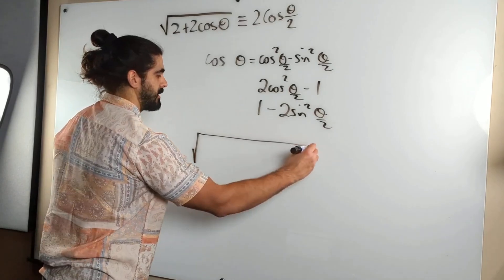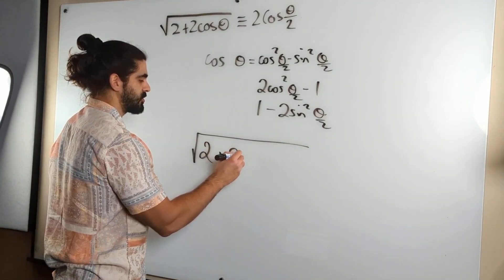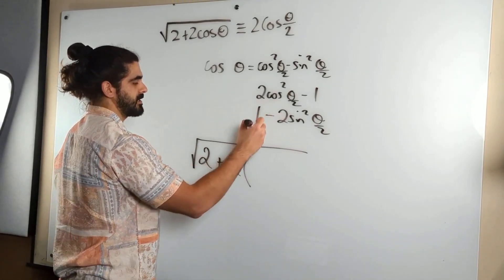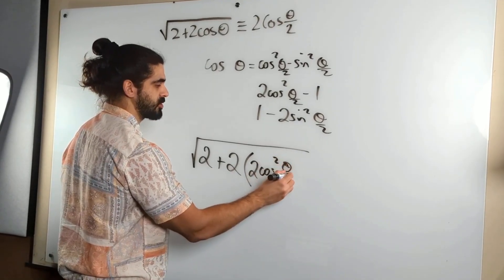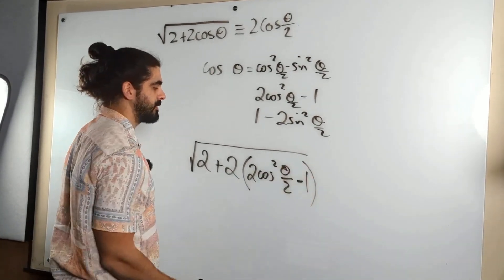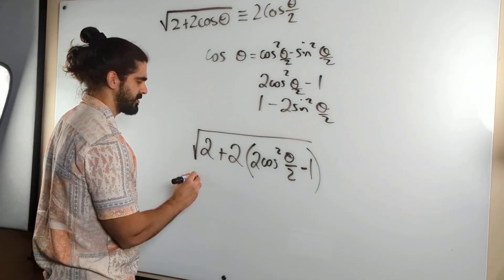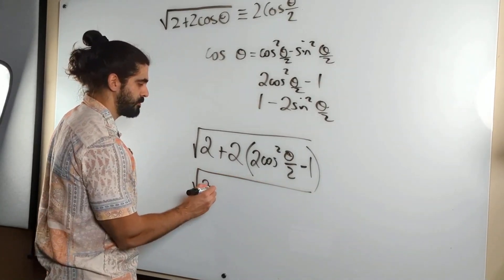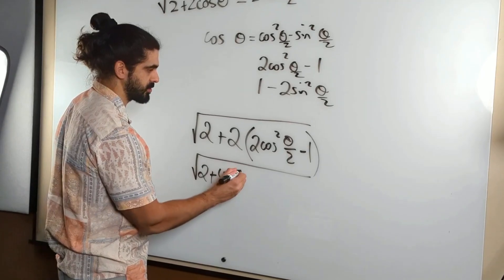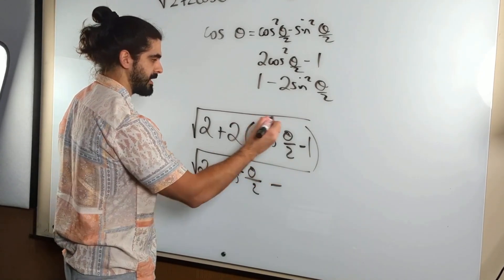So you get √(2 + 2(2cos²(θ/2) - 1)). Expanding the brackets, you have 2 + 4cos²(θ/2) - 2.